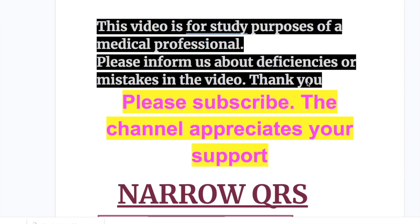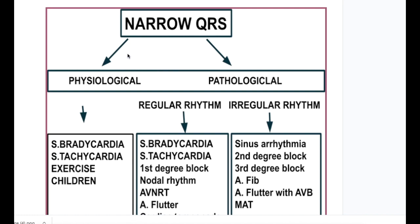In this video, we will discuss EKG criteria and features in different disorders that cause narrow QRS. Narrow QRS is divided into two sets: physiological and pathological. Pathological is again divided into regular rhythm narrow QRS and irregular rhythm narrow QRS. Sinus bradycardia and sinus tachycardia are included in both physiological and pathological regular rhythm because both cause physiological and pathological narrowing of QRS.